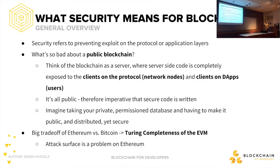What does security mean for blockchain? It basically refers to preventing any kind of exploit on the protocol or application layers. When we think about protocol, we think about Ethereum network nodes. When we think about application, we think about clients on dApps having exposure to all endpoints on the smart contract. If you think of a public blockchain almost like a server, it's essentially server-side code that's completely public — and even the database is completely public. How is this different from how people like Facebook host their applications?